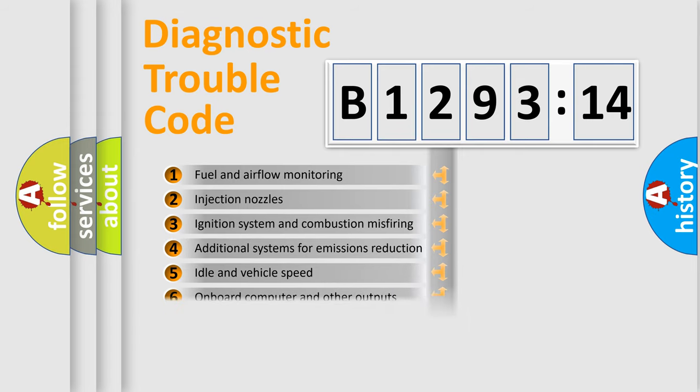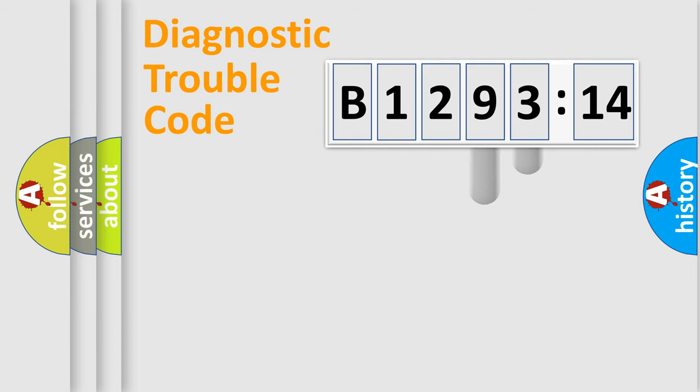The third character specifies a subset of errors. The distribution shown is valid only for the standardized DTC code. Only the last two characters define the specific fault of the group.